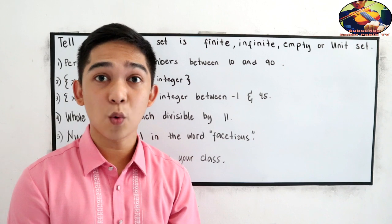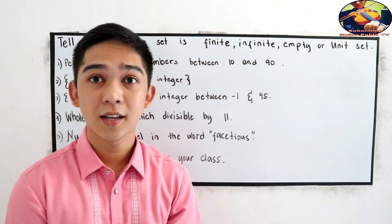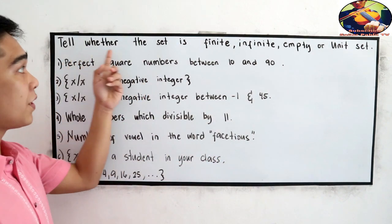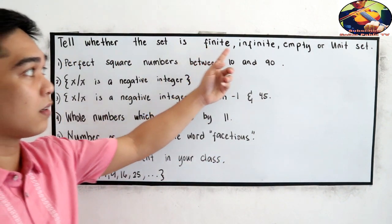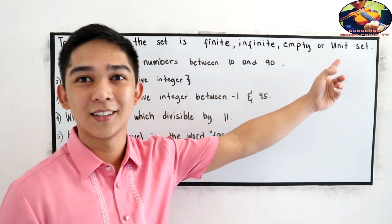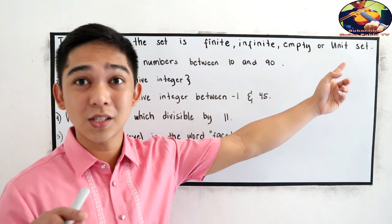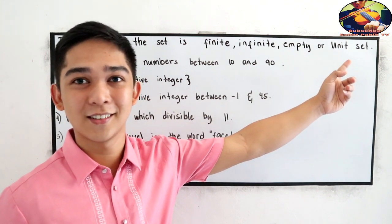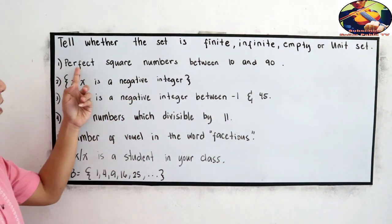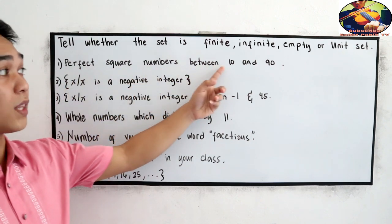This time, I want you to answer the following examples in our whiteboard. Tell whether the set is finite, infinite, empty, or unit set. You can pause this video if you want to answer. Number one, perfect square numbers between 10 and 90.